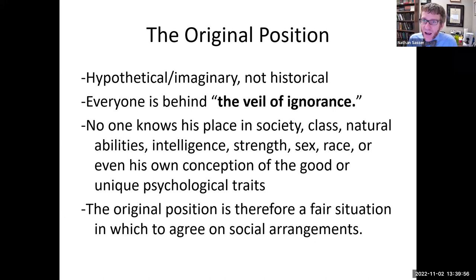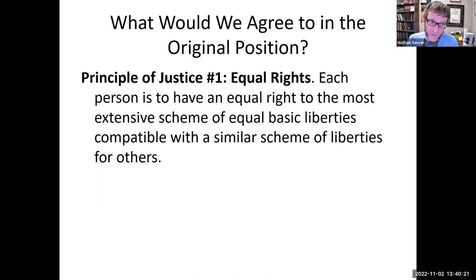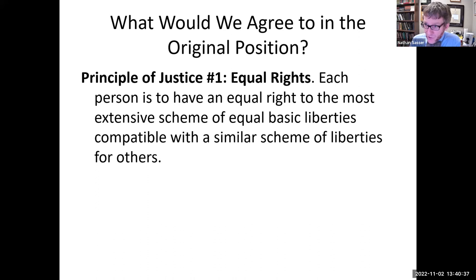So what principles would we all agree on if we were actually in the original position? Rawls says that, first of all, we would all agree to a principle of equal rights. That is, we would agree that each person is to have an equal right to the most extensive scheme of equal basic liberties that are compatible with a similar scheme of liberties for others. This first principle is not really a principle of distributive justice in particular — it's about political justice. For example, he thinks we would all agree to confer on each other the right to free speech, freedom of religion, or free association, to the widest possible extent until our exercise of liberties began to impinge upon and violate the same liberties for other people.